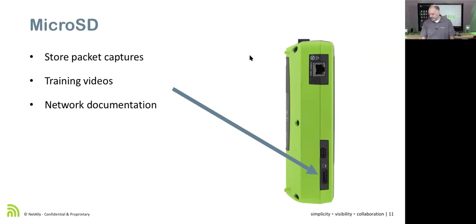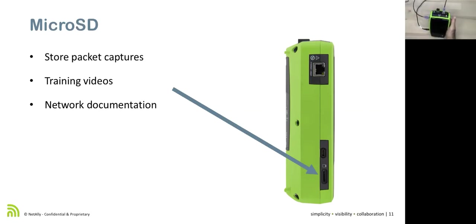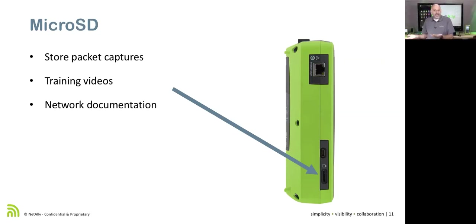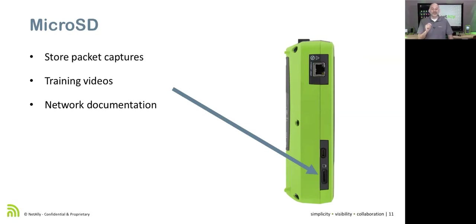We've got a micro SD card slot. We can load videos and PDF files on it — I've created network documentation, put it on there, and open it right on the device. We can also do packet captures and either upload them to LinkLive or save to the SD card, pop it out, and open in Wireshark. This captures at full line rate 10 gig, up to one gigabyte, and full line rate 1 gig. With a filter, we can capture and analyze packets efficiently.